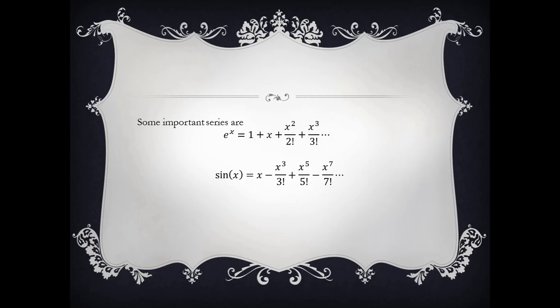You can also note the series expansion of sin(x), which is x - x³/3! + x⁵/5! - ... So C0 is 0, C1 is 1, C2 is 0, C3 is -1/3!, C4 is 0, and so on. Similarly, in the series of cos(x), C0 is 1, C1 is 0, C2 is -1/2!, C3 is 0, and so on.